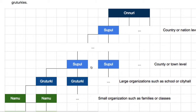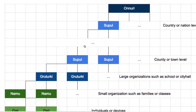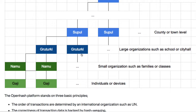So in summary, Onuri, Suphul, and Grutegi are geographic concepts. But Namu is quite different — Namu is an abstract, conceptual group, like a family, school class, or community. It is a conceptual set of Gazi.